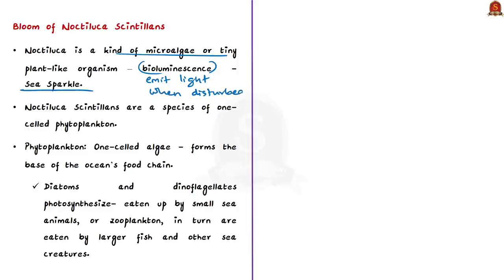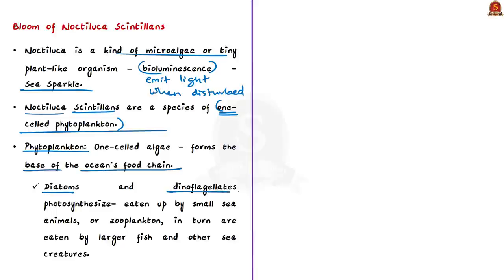Noctiluca scintillans is a species of one-celled phytoplankton. Phytoplankton is a one-celled algae that forms the base of the ocean's food chain. Diatoms and dinoflagellates — larger phytoplankton — undergo photosynthesis. Phytoplankton feed on nearby nutrients and are eaten by small sea animals or zooplankton, which in turn are eaten by larger fishes and other sea creatures.